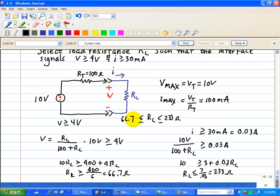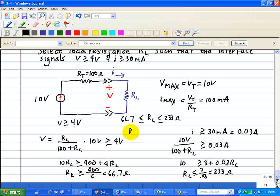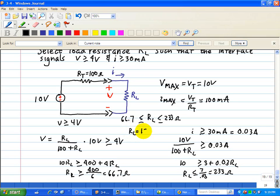However, to allow for parameter variations, we select RL to be 150 ohms, which happens to be the arithmetic midpoint of the allowable range, and is also a standard value of resistance.